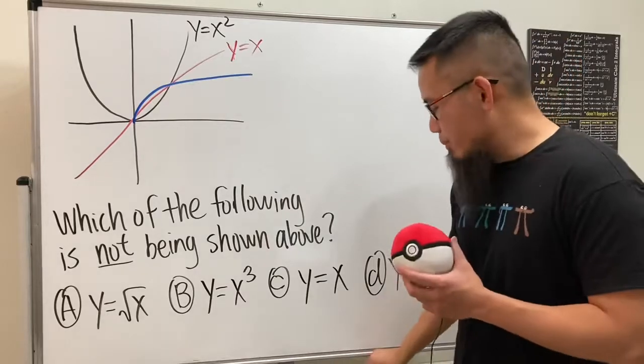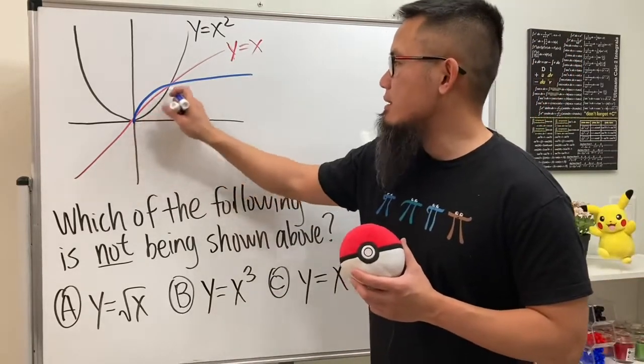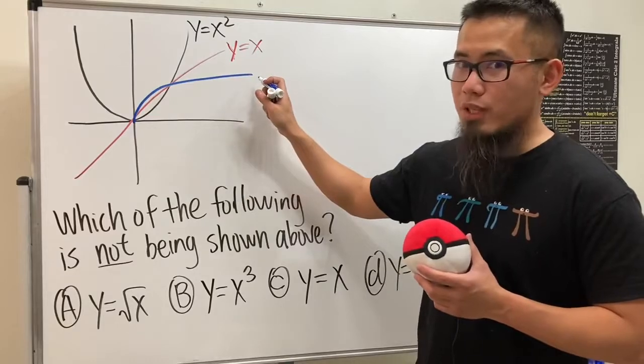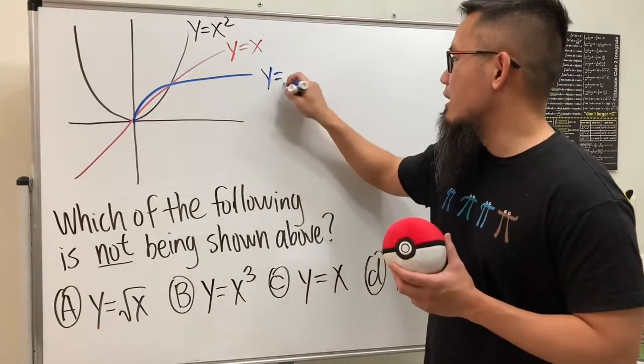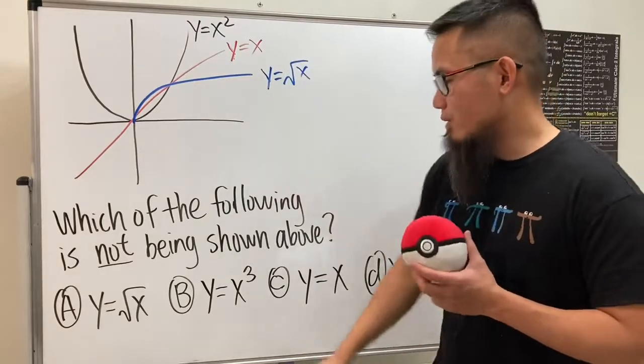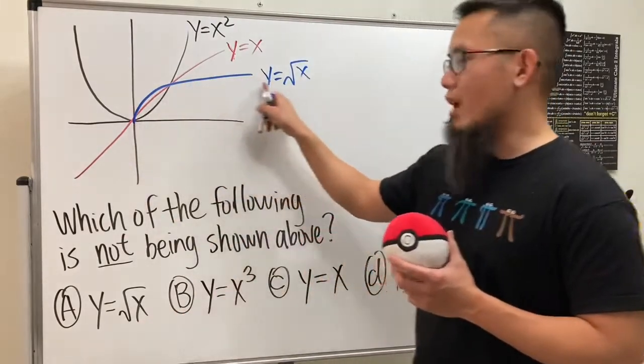Next, we have the blue one. The blue one looks like this, and remember, this is the power function when the power is one half. So, this right here is actually just a square root function. This is the blue one.